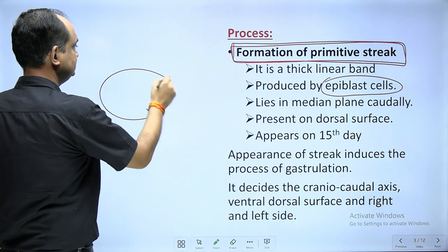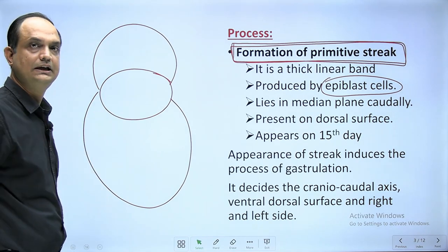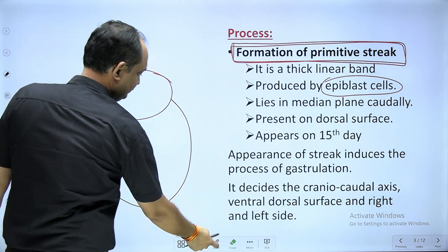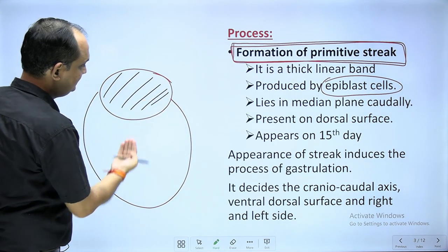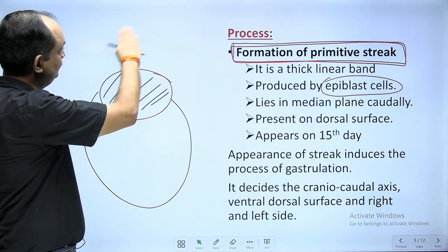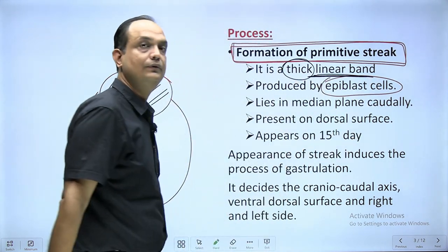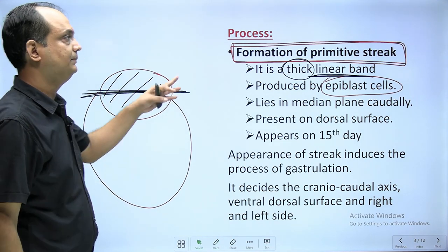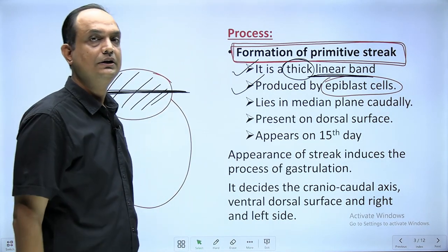This is your disc — the bilaminar germ disc. On one side you have the amniotic cavity, on the other side you have the yolk sac. Now you are seeing this from above, so if you remove this amniotic cavity and see the disc from above, you are actually seeing the epiblast cell layer. The hypoblast will come on the lower part facing towards the yolk sac. In this epiblast cell layer, which is the superior layer after removing the amniotic cavity, there is a formation of a thick linear band — this linear band forms in the midline. Primitive streak is a thick linear band, produced by epiblast cells, lying in the midline.